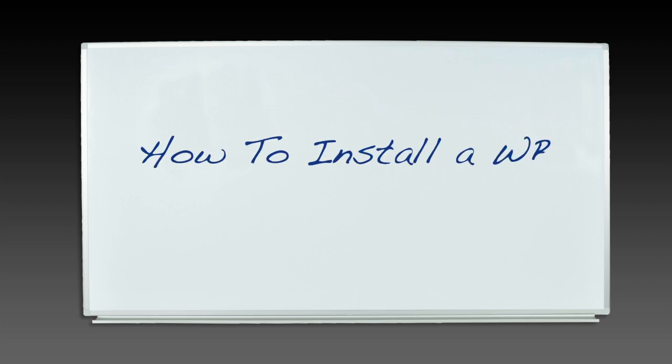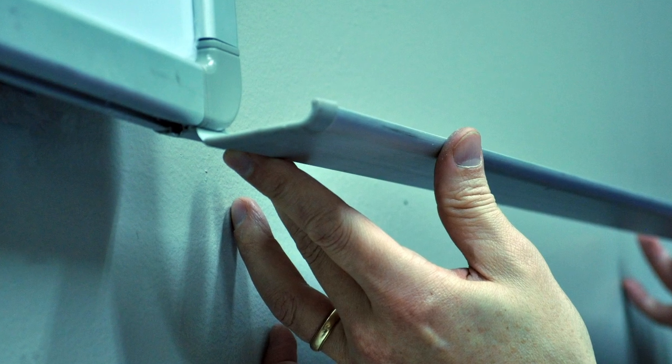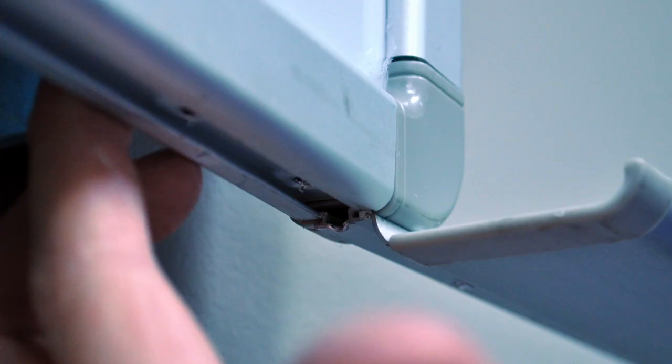Today we're going to learn how to install a WB Series whiteboard by Luxor. Insert the tray into the bottom groove on your whiteboard. Slide the tray to the center.